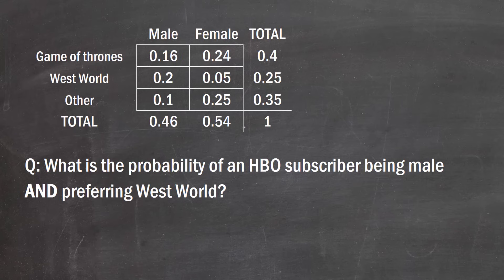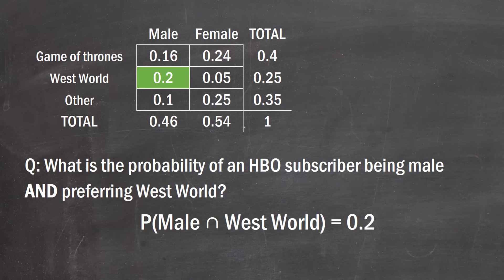The next question asks: what's the probability of an HBO subscriber being male AND preferring Westworld? That's a joint probability — 0.2 — represented with the intersection symbol.